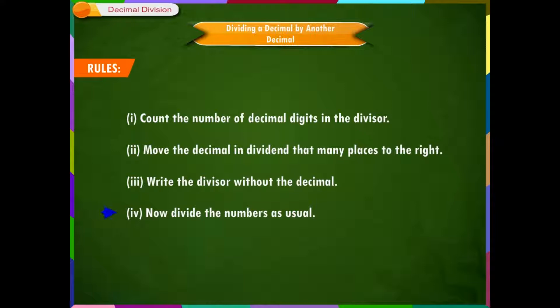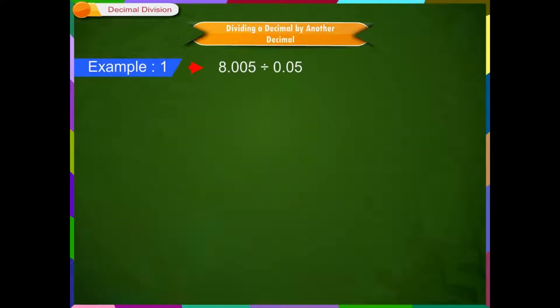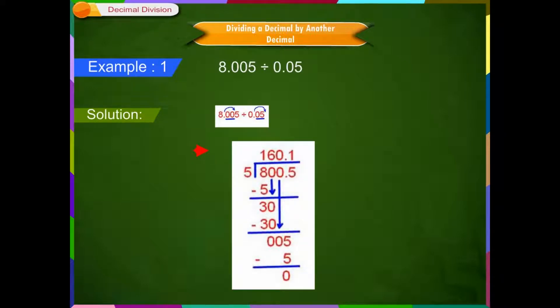Example 1: 8.005 divided by 0.05. Solution: 8.005 divided by 0.05. Step 1: Count the number of decimal digits in the divisor. Step 2: Move the decimal in dividend that many places to the right. So, now the division problem becomes 800.5 divided by 5. Step 3: Write the divisor without the decimal. Now divide the numbers as usual.